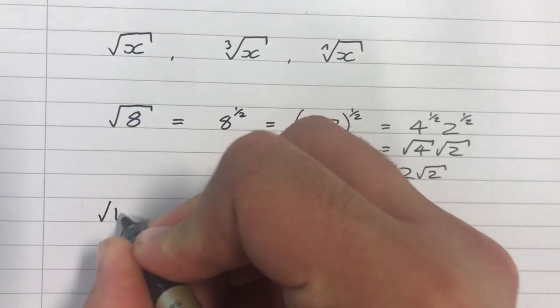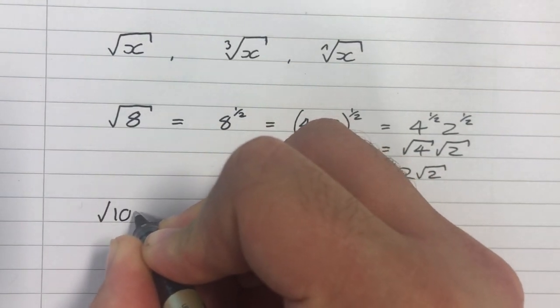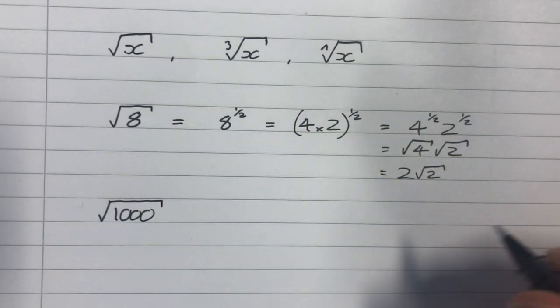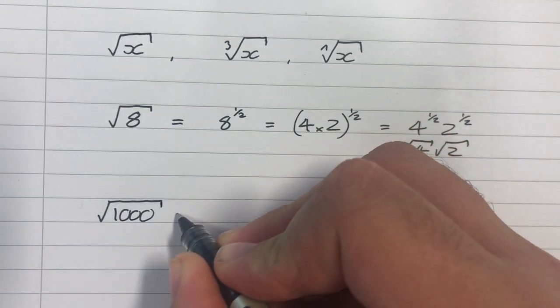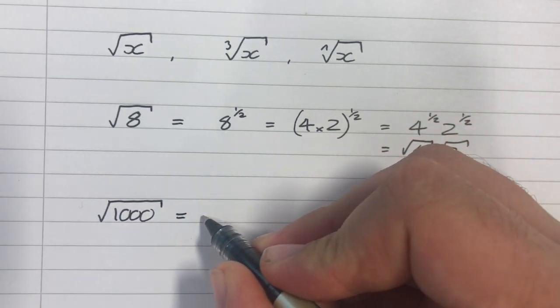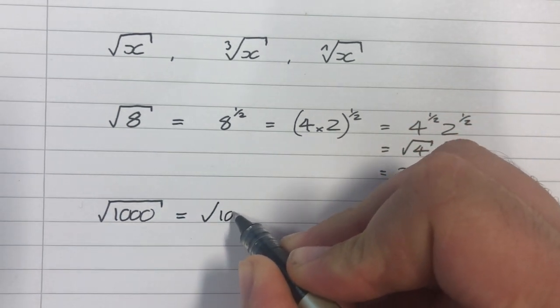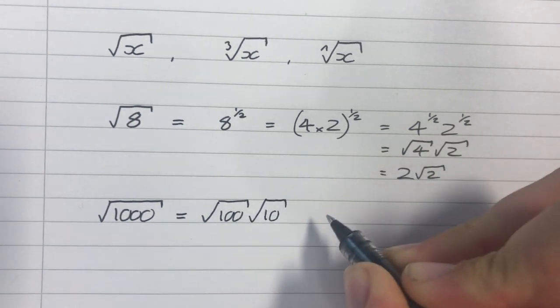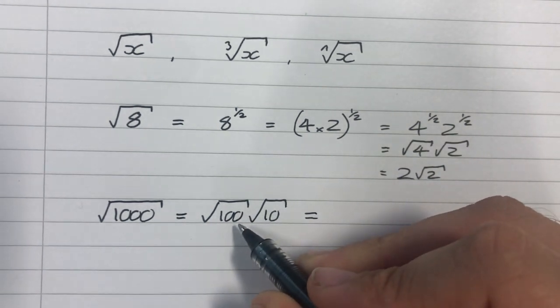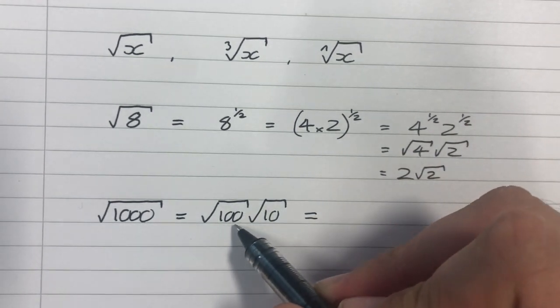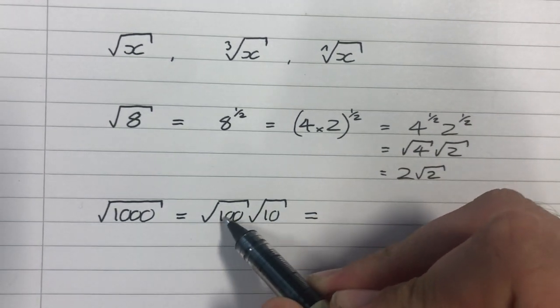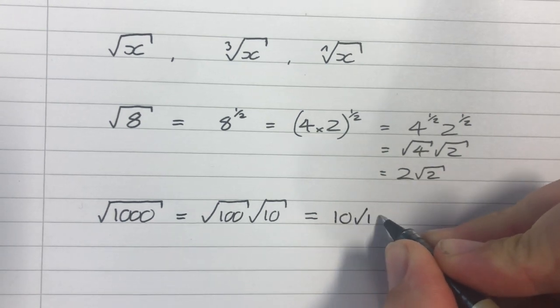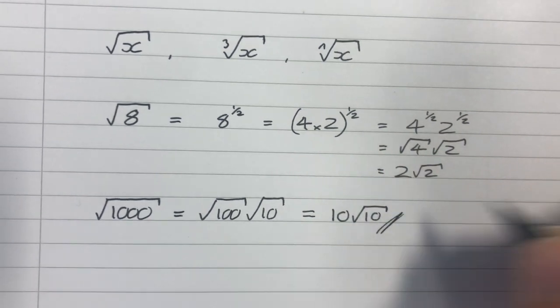Another example, let's have a look at the square root of 1,000. Well, we know that 100 goes into 1,000. And it goes into 1,000 10 times. And the reason I chose 100 is because 100 is a square number. And in fact, it's the largest square number that goes into 1,000, because we're left with 10 root 10, which doesn't simplify any further.